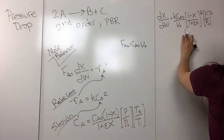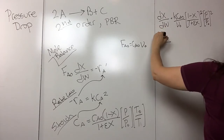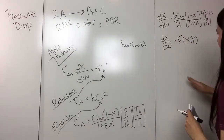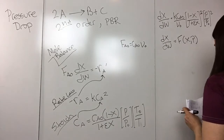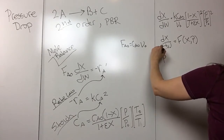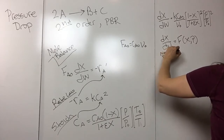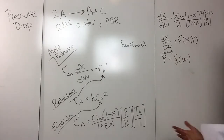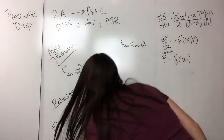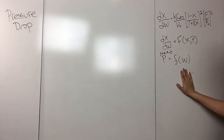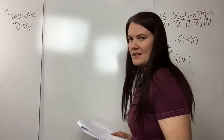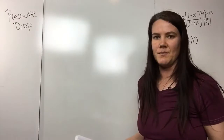Looking at this equation, we can see right away that dX/dW is a function of both X and P. So in order to solve this equation, we need to find P as a function of W. We need a relation of the pressure drop to the catalyst weight. We can find this relationship by using the Ergun equation, which is used to calculate pressure drops in packed porous beds.